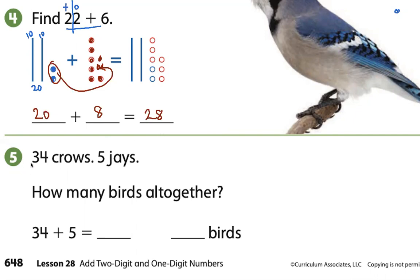Problem 5 says 34 crows and 5 jays. How many birds all together? All together is a joining word, so we know we are going to add. So we are going to add 34 plus 5.